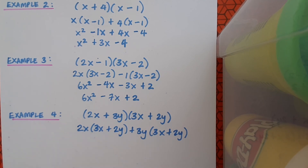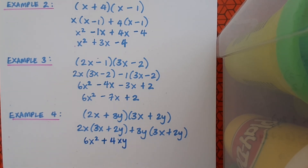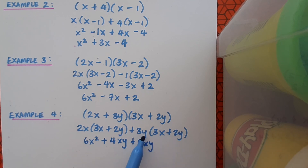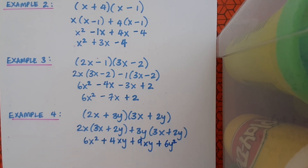2x by 3x gives 6x squared. Then 2x by 2y gives plus 4xy — positive by positive is positive, 2 by 2 is 4, and x by y is xy. Next, plus 3y by 3x gives plus 9xy — 3 by 3 is 9, and I'll write variables in alphabetical order so x comes before y. Finally, plus 3y by plus 2y gives plus 6y squared.